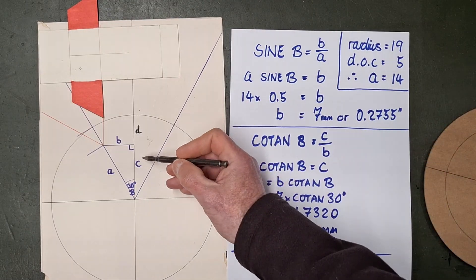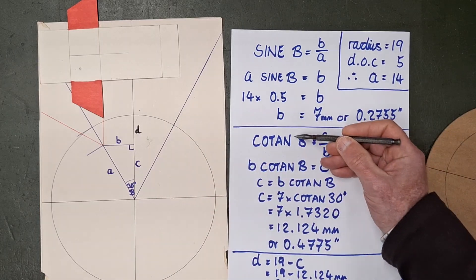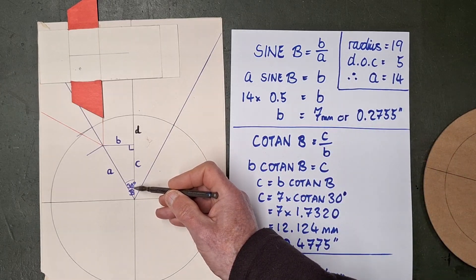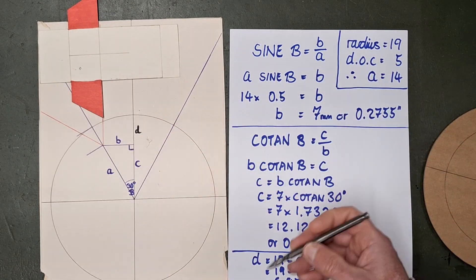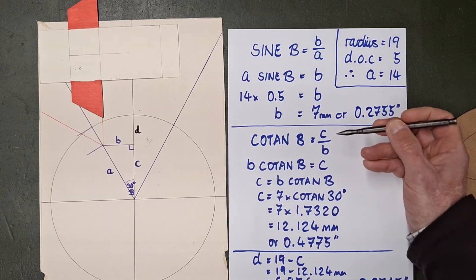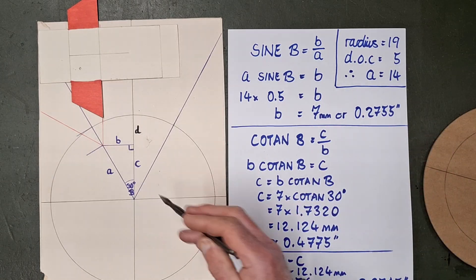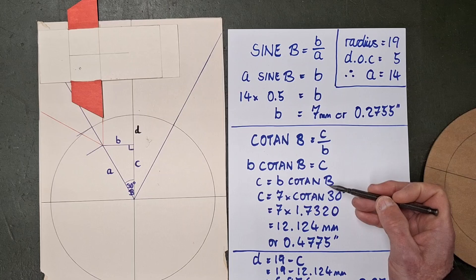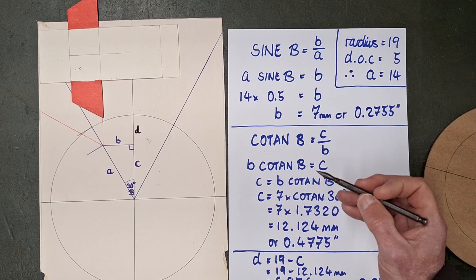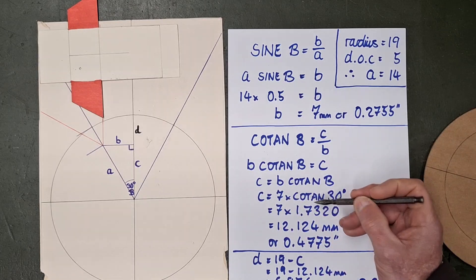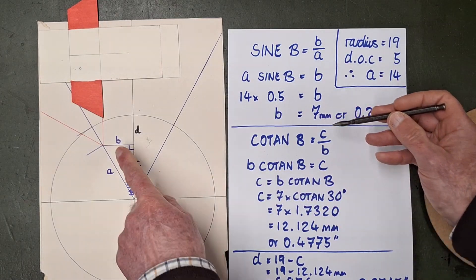So we need to know what dimension C for the base of the triangle is. So that is the cotangent of that angle B of 30 degrees. So the cotangent B is C over B. So again, multiplying up by the one underneath your fraction, B times cotan B is equal to C. So C there is B times cotangent of B, which means that when you look it up in your table, you get a substitute value of 1.7320.